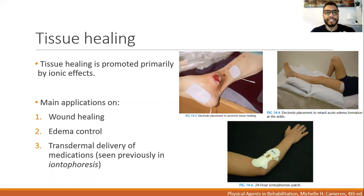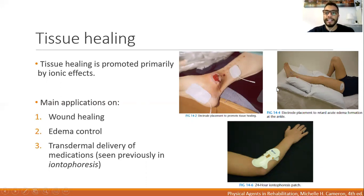The main applications of these kinds of currents for tissue injury is to close wounds. For example, in this picture here, we place the electrodes next to the wound, and then the currents will cause the wound to close. We also have effects of currents to reduce edema. In this picture, you'll see the electrodes placed here in the leg, in the lower limb, in combination with elevation of the limb, which also helps in edema reduction.